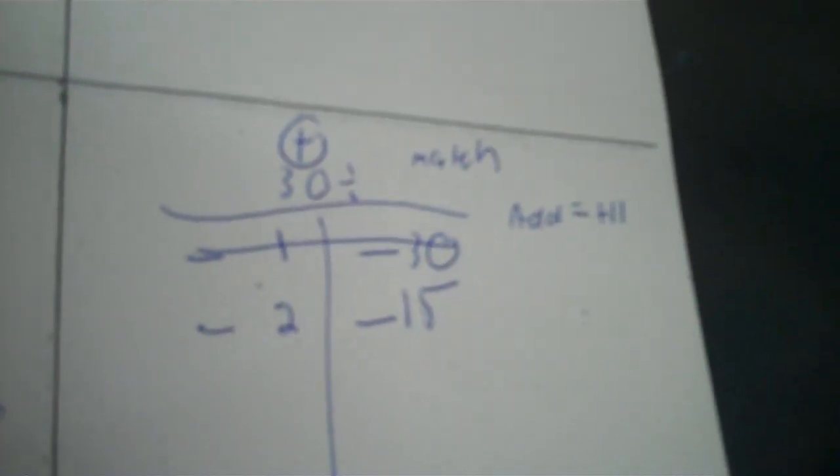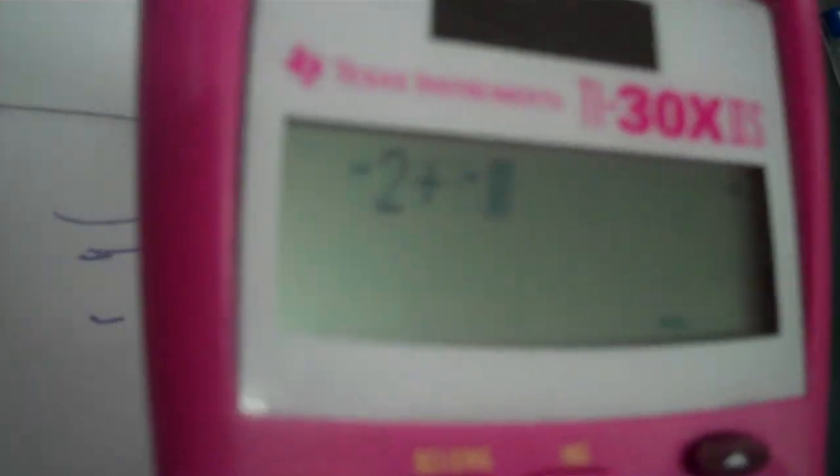So I start dividing. 30 divided by 1 is 30. So I add negative 1 plus negative 30, that's negative 31. That's not what I'm looking for. Then I put 2 down. 30 divided by 2 is 15, so I put 2 and 15 down. Then I add negative 2 plus negative 15, that's negative 17.